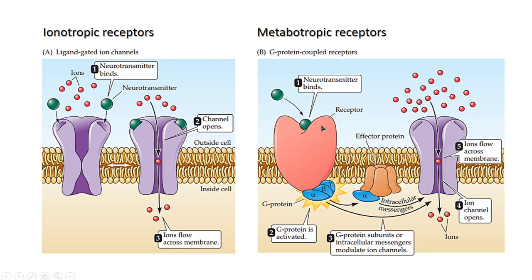Before the arrival of the neurotransmitter, the G-protein was in the inactive form. When the neurotransmitter binds to the receptor and causes a conformational change, this brings a conformational change in the G-protein and it gets activated. Once activated, the subunits of this G-protein separate — particularly the alpha subunit gets separated — and it will bind to other effector proteins. This effector protein, upon activation or inactivation, may produce some intracellular chemical messenger, which we generally call the second messenger.